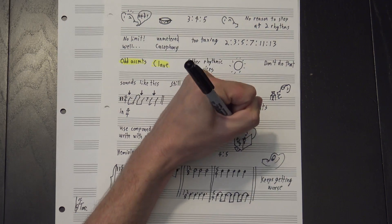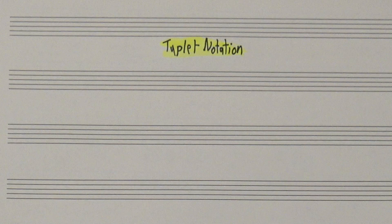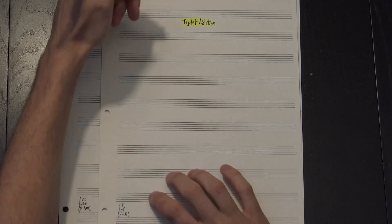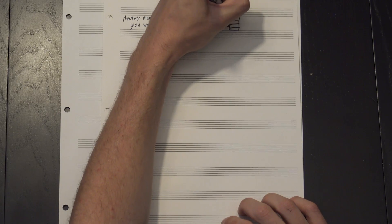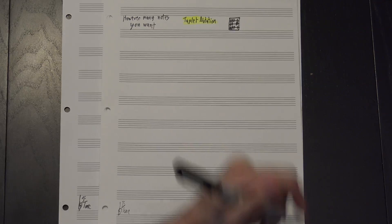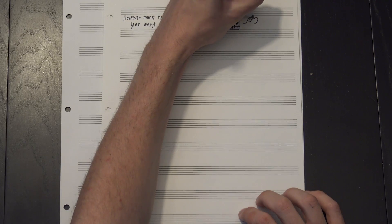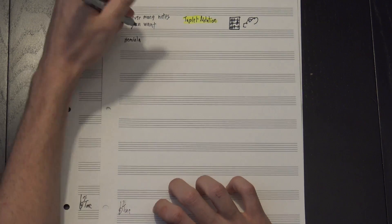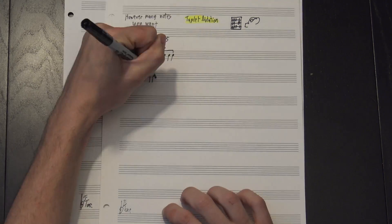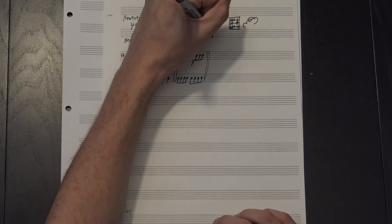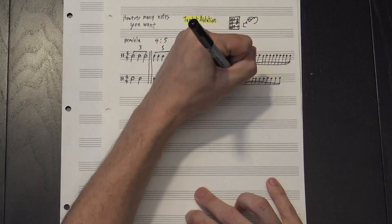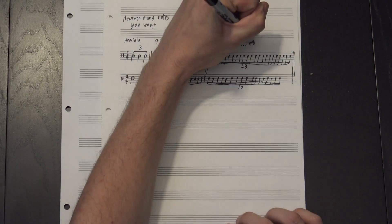The second trick is tuplet notation, which we covered back in our triplets video. Here, you just write however many notes you want, then add a bracket and write the number over them. This says that they should be played in the same amount of time it takes to play the next lowest power of 2. So our hemiola could be this, four against five is this, and seven against eight is this. Heck, even 17 against 23 is easy to write, even if it's hard to listen to.